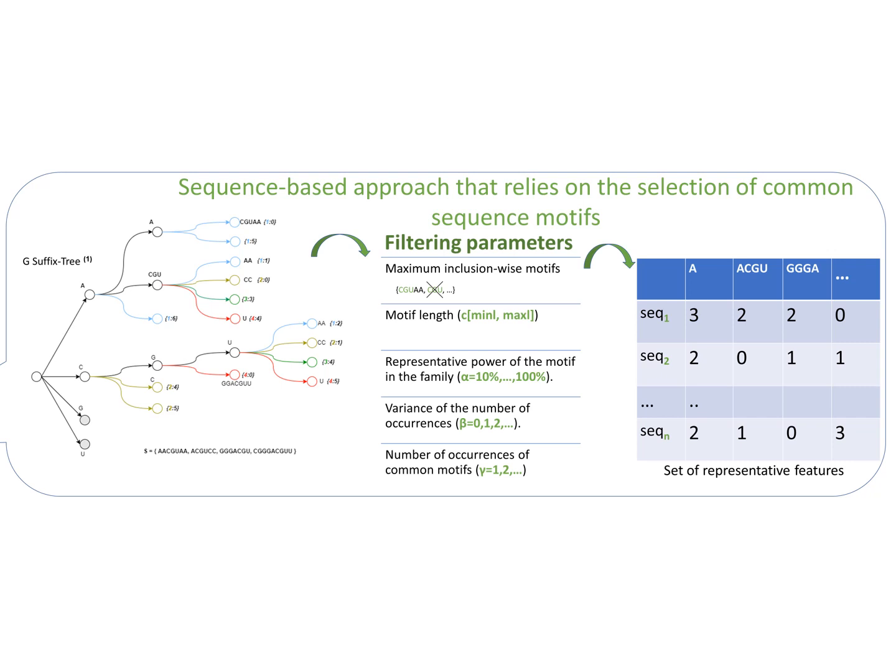Fourth, another threshold is the variance of the number of occurrences of motif between sequences. If the threshold is 0, for example, the number of occurrences must be the same in all sequences, or at least for the sequences that are chosen according to the previous parameter.